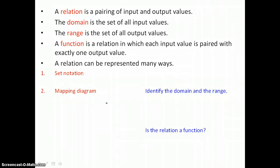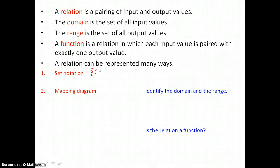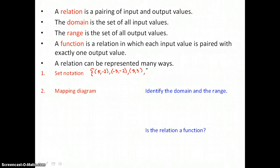A relation can be represented in many ways, and the first way we're going to look at is set notation. The first member in this relation is (5, -2). The next member is (-3, -2). The third member is (3, 3). And the fourth member is (-1, -1). This relation is a finite relation because it has a countable number of members: 4.